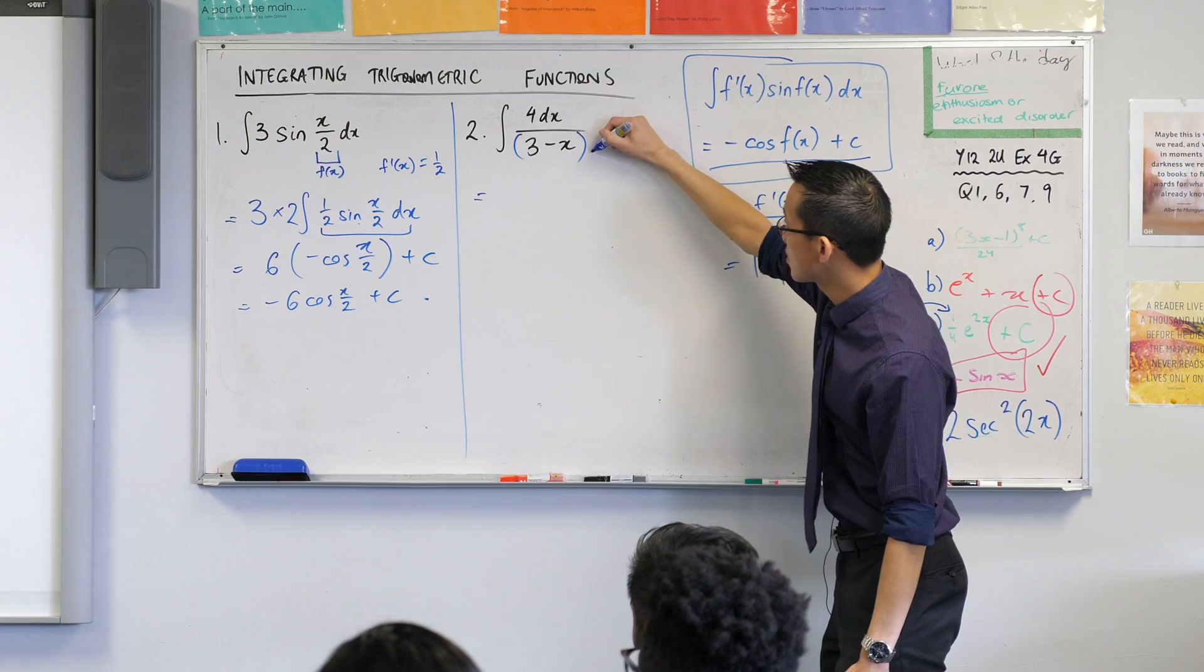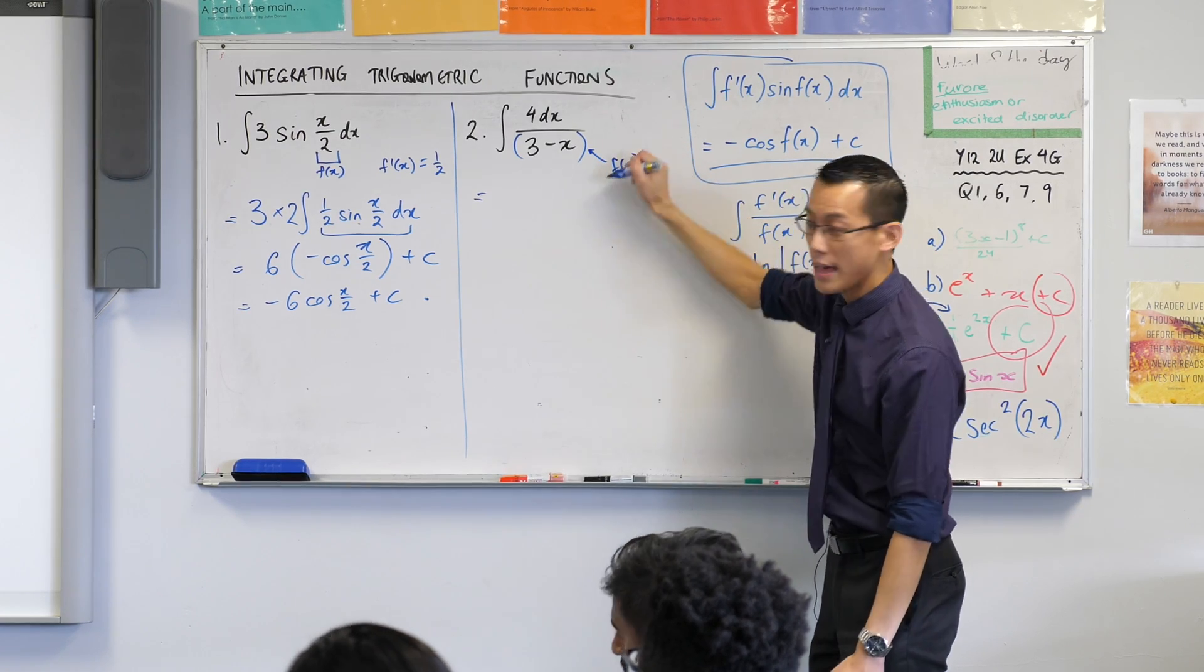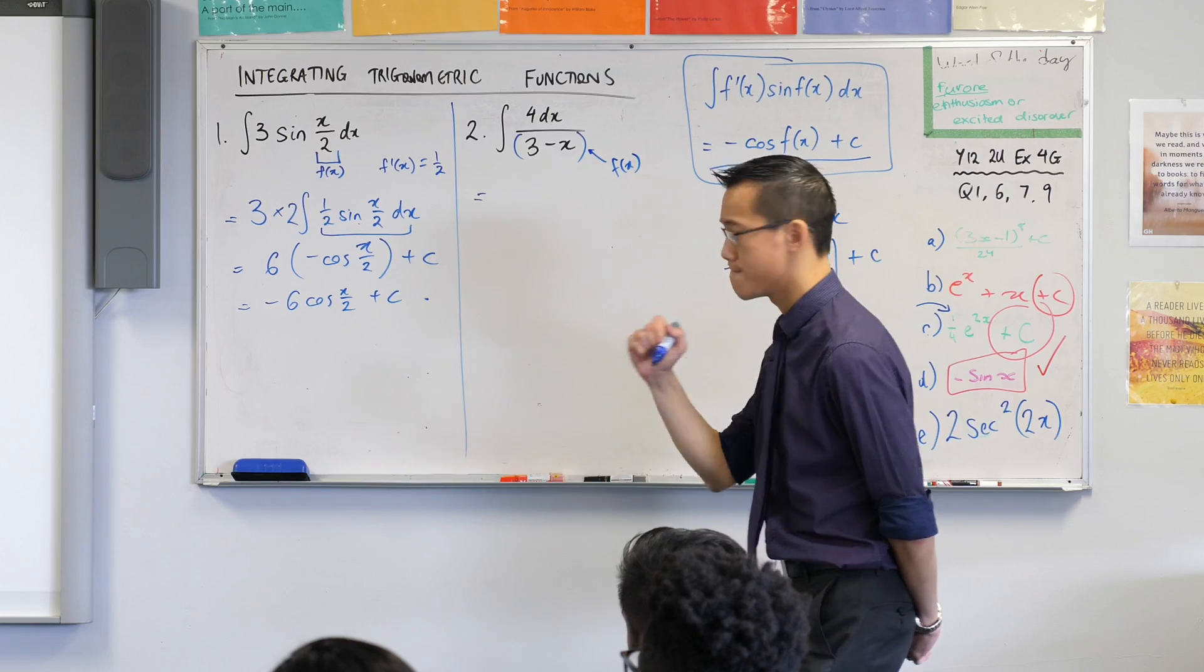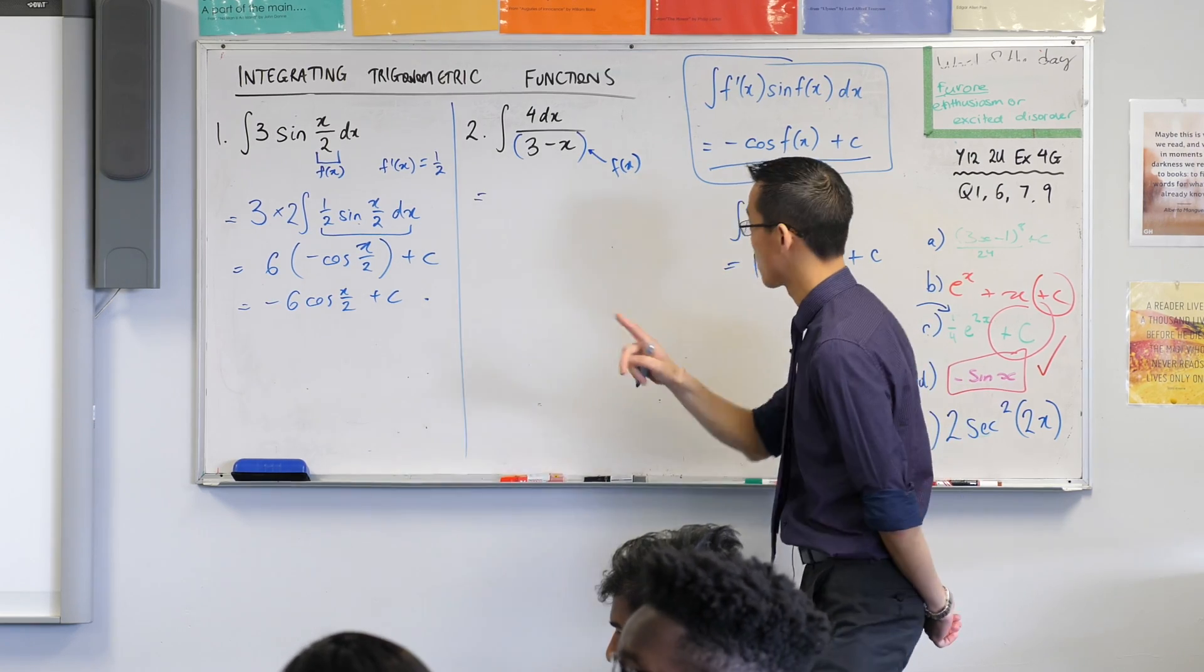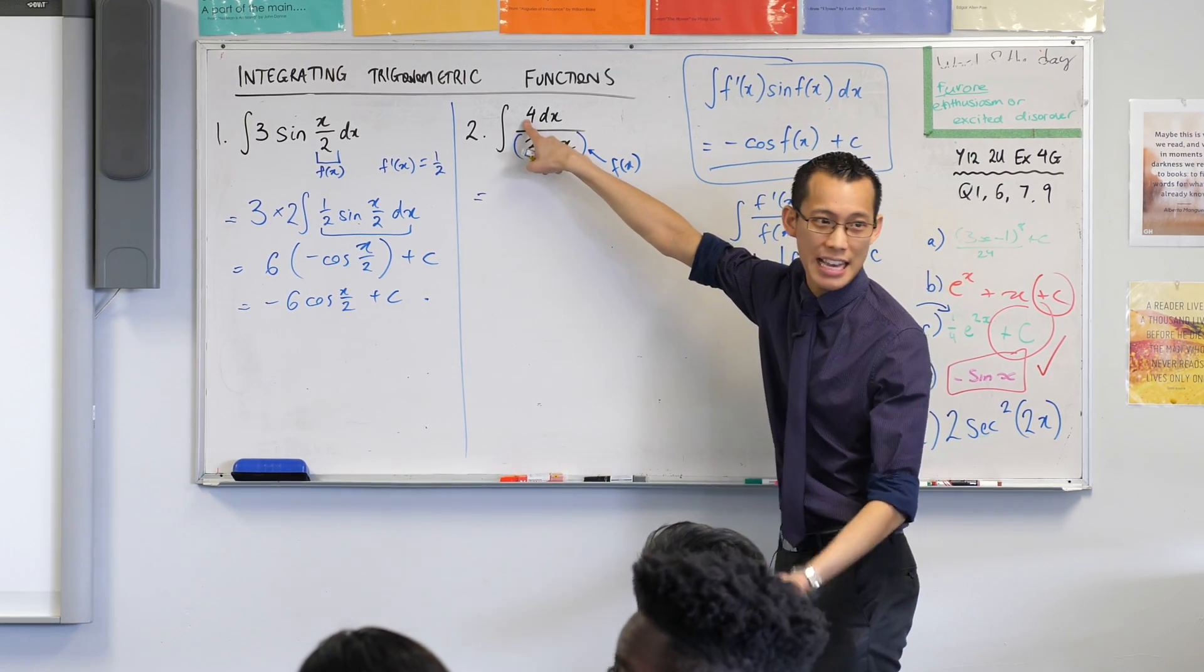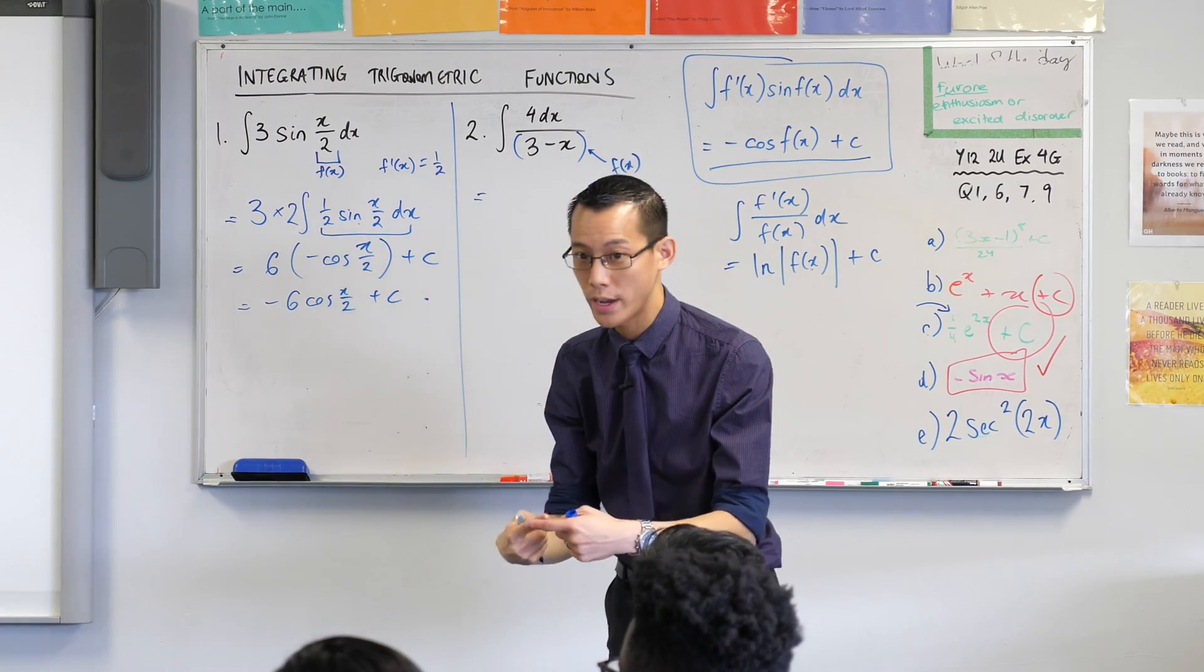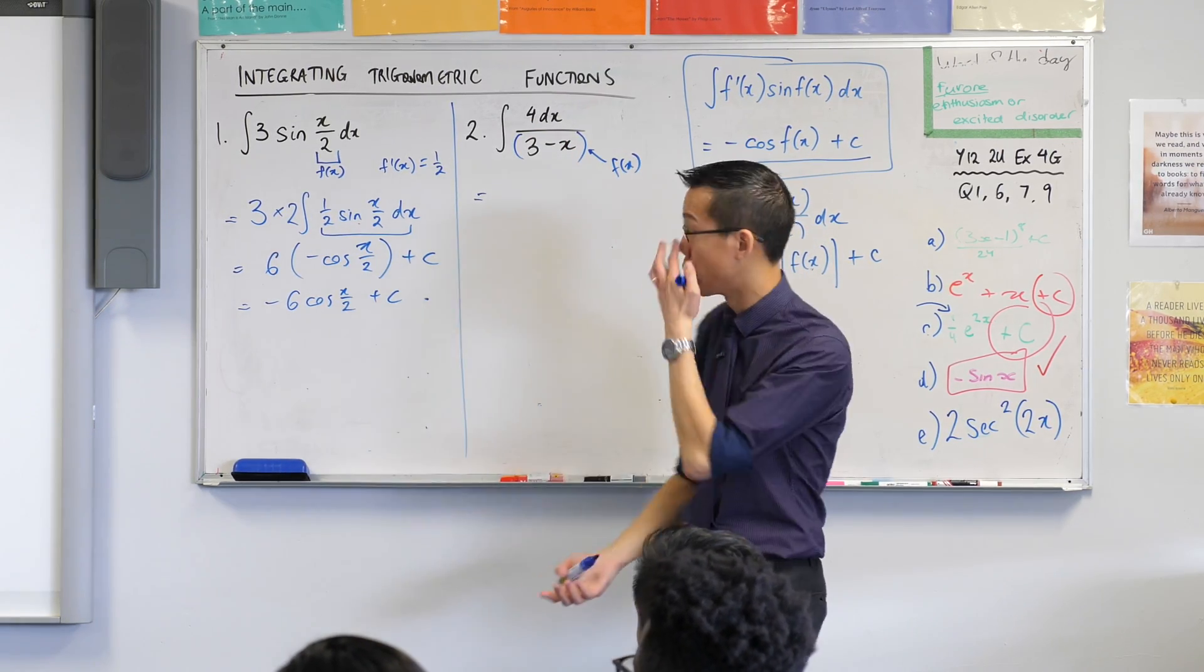Now have a look. If this is my f of x, what should be my f dash? One. Negative one. It's negative one, right? Very close. So you're like, well that guy's no help at all, right? It's not a negative one. So this time I'm going to do it a little quicker to show you what it looks like when you're more comfortable with it.